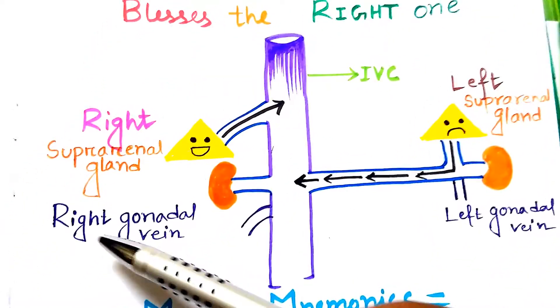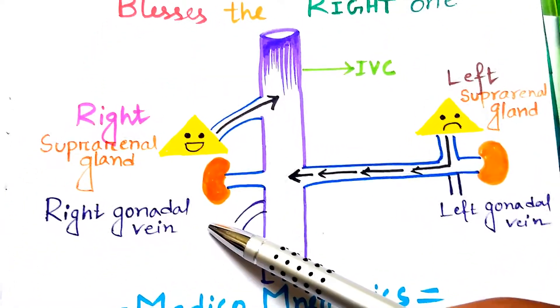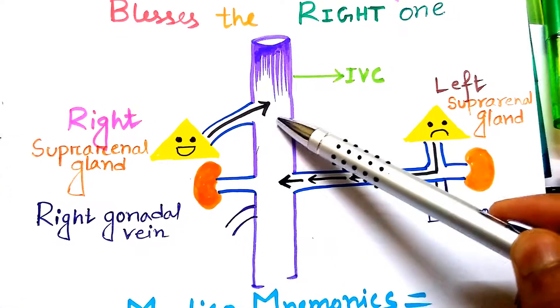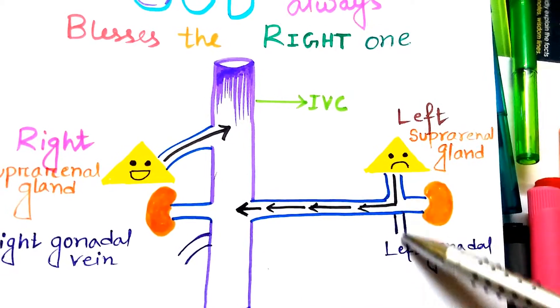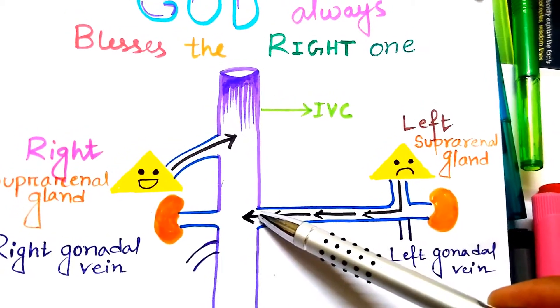It holds true for the right gonadal vein also. Yes, the right one directly drains into the inferior vena cava. The left one has to cover long distance, that is through the left renal vein.